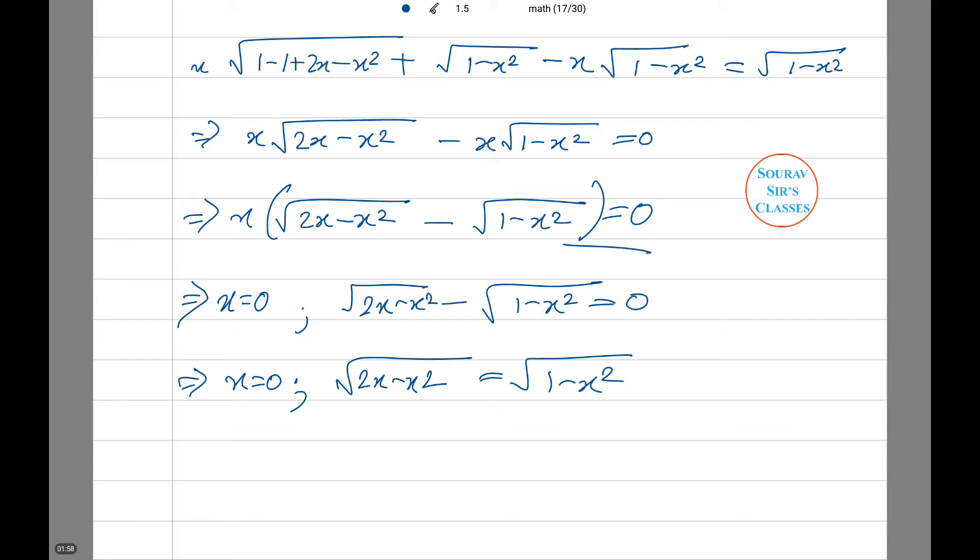After this equation, either x is equal to 0 or this whole term is equal to 0. We split it and we find it out. x is equal to 0 or square root of 2x minus x squared equals square root of 1 minus x squared.